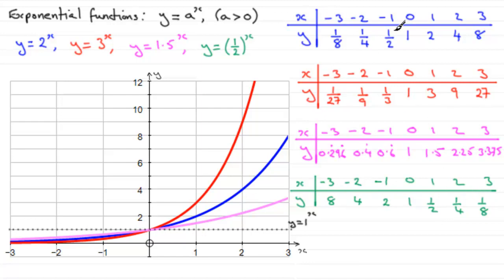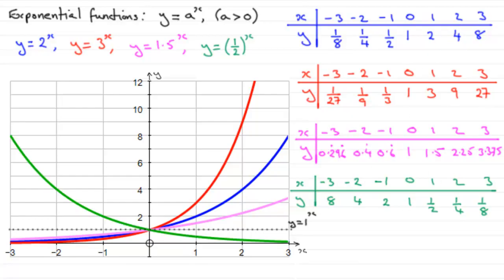Comparing this to y equals 2 to the power x, you can see the values are essentially reversed. What we have is a reflection of the graph of y equals 2 to the power x in the y-axis, and the resulting graph confirms this.